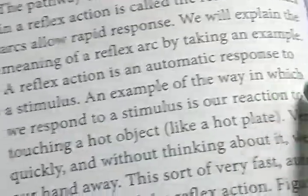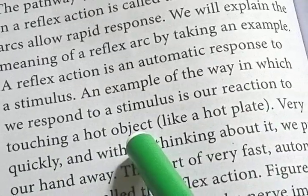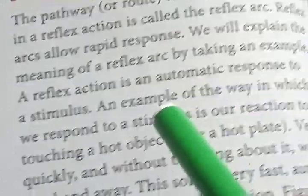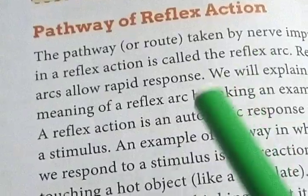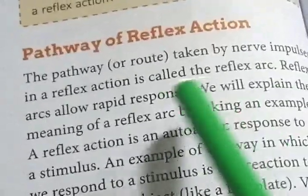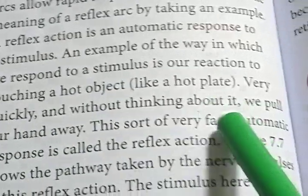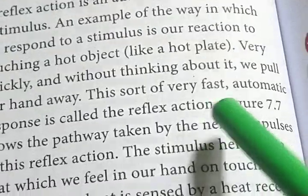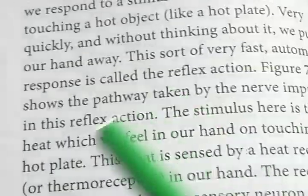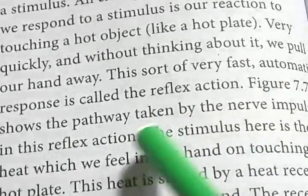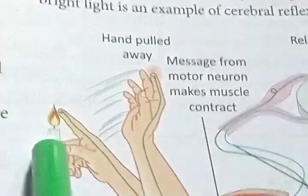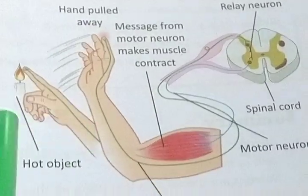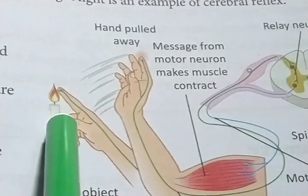An example of the way in which we respond to a stimulus is our reaction to touching a hot object. The pathway taken by nerve impulses in this reflex action is shown in figure 7.7. As we touch the flame of the candle, we instantly pull our hands away. We collect different types of stimulus from outside — this very fast, automatic response is called reflex action.